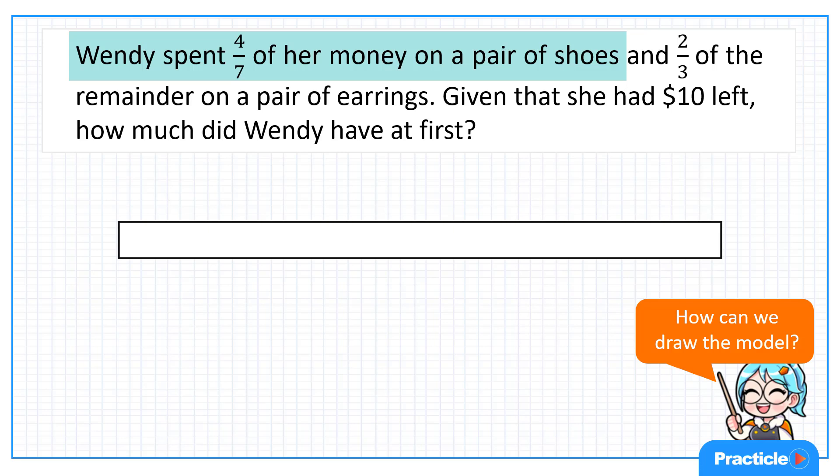Yes, we do. We are given that she spent 4/7 of it. So this means that if we were to divide Wendy's money into seven equal parts, Wendy would have spent four of these parts.